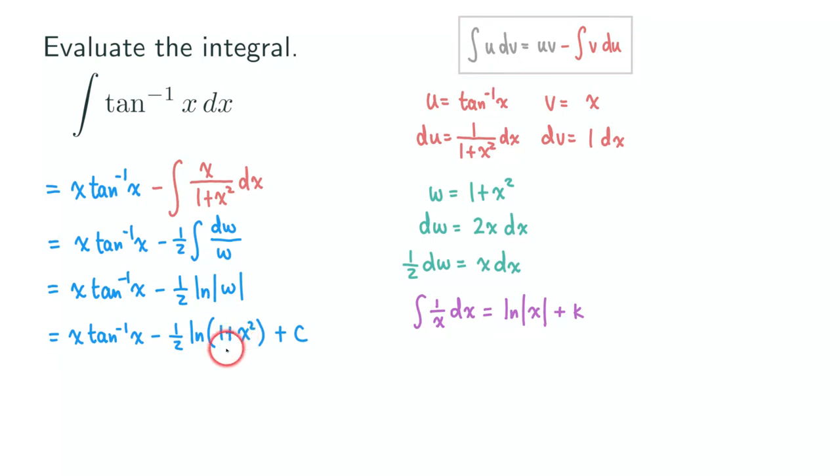Now, I just want to just point out one thing here is that 1 plus x squared, it's a positive number. So we do not need the absolute value anymore. So we can change it to just parentheses. Okay, so that's the answer. That's the antiderivative for the tangent inverse function.